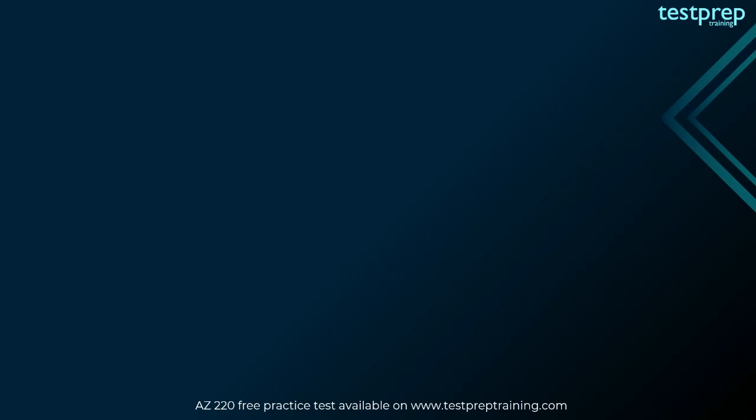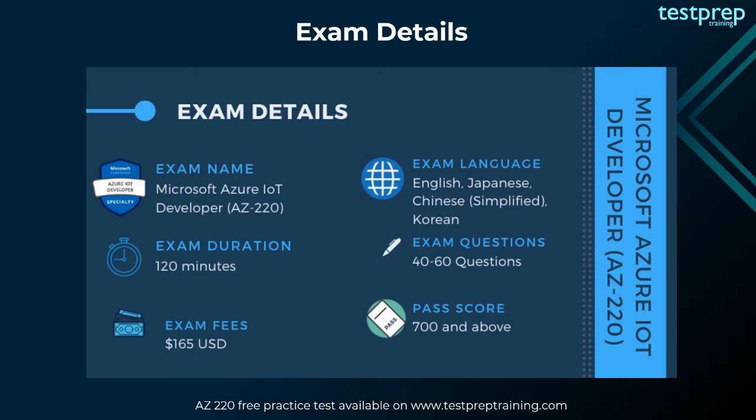Exam details: the Microsoft Azure IoT Developer AZ-220 exam comprises 40 to 60 questions, all of which are multiple-choice or multiple-response questions. This exam is available in English only. The registration fee is $165 US dollars, and the candidate can register with Microsoft's partner Pearson VUE. The passing score requires achieving 700 or more to pass the exam.